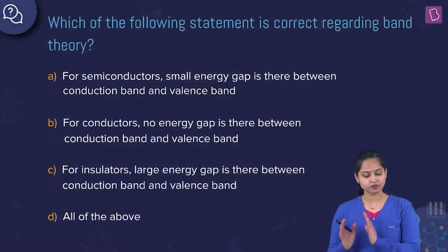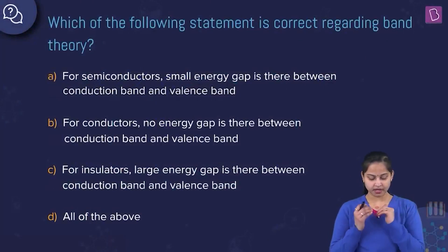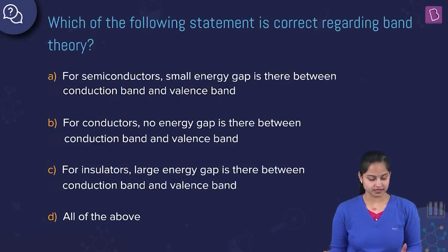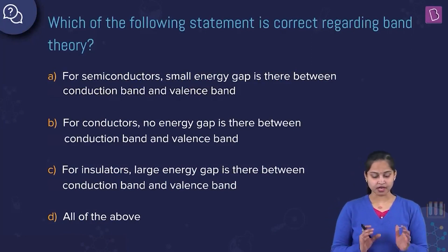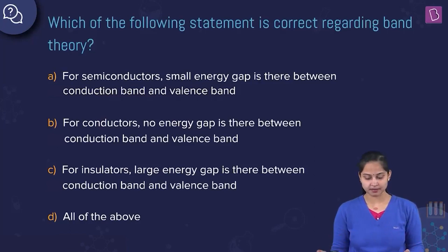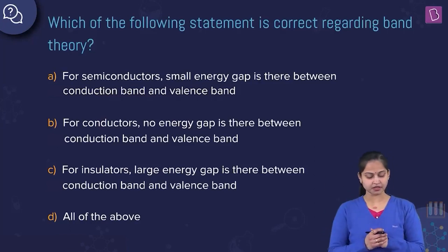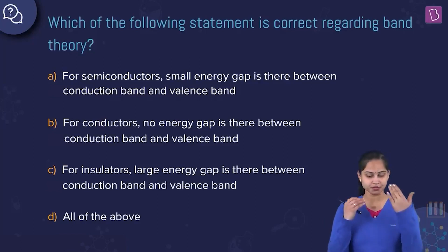The question is: which of the following statements is correct regarding band theory? Option A: for semiconductors, there is a small energy gap between the conduction band and valence band. Option B: for conductors, there is no energy gap between the conduction band and valence band. Option C: for insulators, there is a large energy gap between the conduction band and valence band. Or D: all of the above.